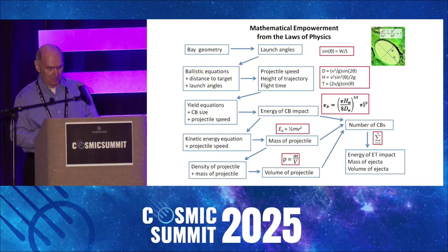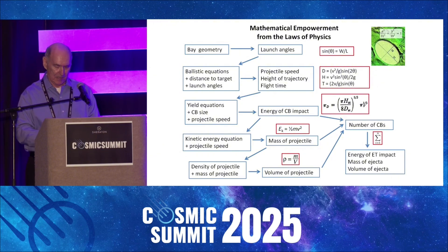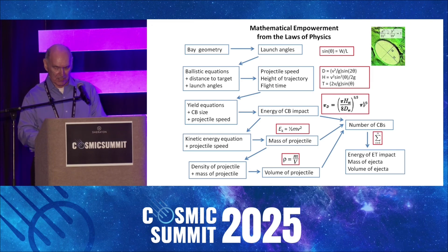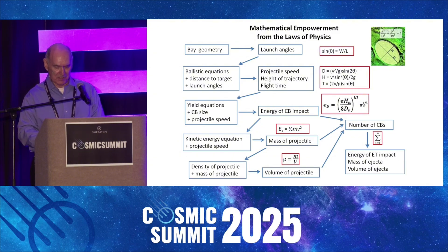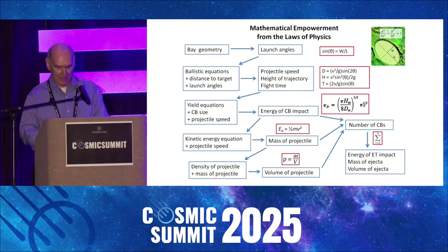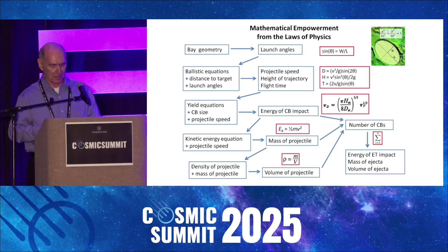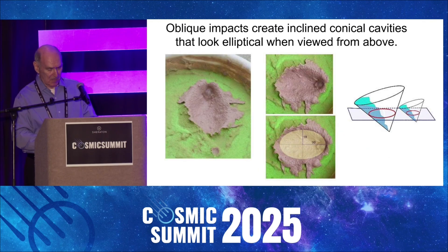The glacier ice impact hypothesis uses the laws of physics as the mathematical foundation for calculating the characteristics of the impact basins and the extraterrestrial impact. The conic sections representing the Carolina Bays and the convergence point by the Great Lakes provide the initial conditions for the basic base model. The ballistic equations provide the velocities of the ice projectiles, and yield loss correlating impact energy with crater size can be used to calculate the size of the projectiles.